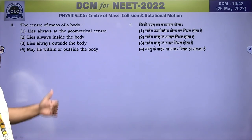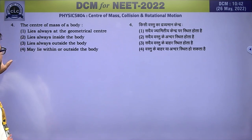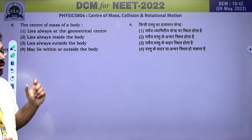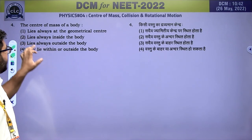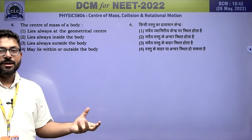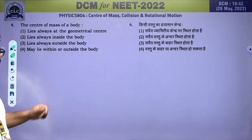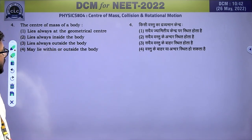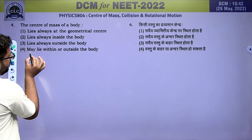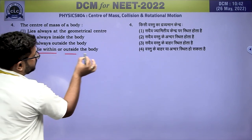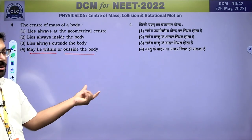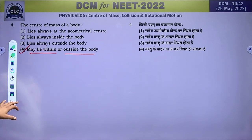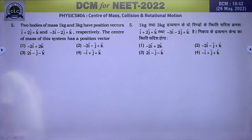The centre of mass of a body: option (a) says it lies always at the geometrical centre — 'always' is not correct. Option (b) says always inside the body — not always true. Option (c) says always outside — also not always true. The correct answer is option (d): it may lie within or outside the body.